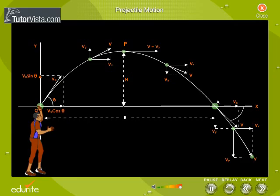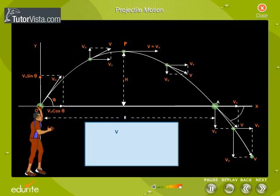Let us now find out the resultant velocity of the projectile at any instant. The resultant velocity V is equal to vector Vx plus vector Vy. By parallelogram law of vectors, V is equal to square root of Vx squared plus Vy squared. V is equal to square root of V0 cosθ whole squared plus V0 sinθ minus gt whole squared.